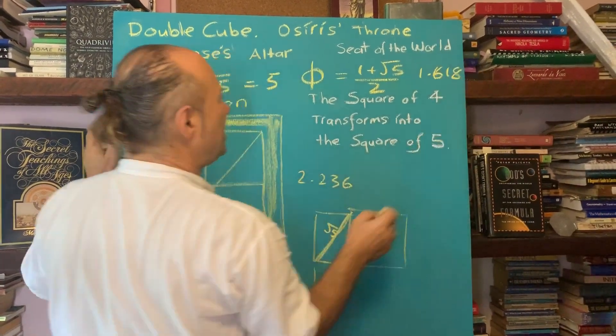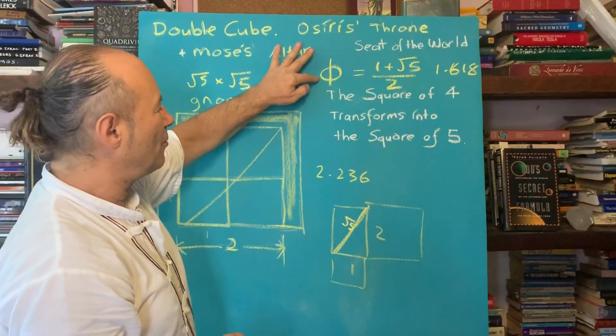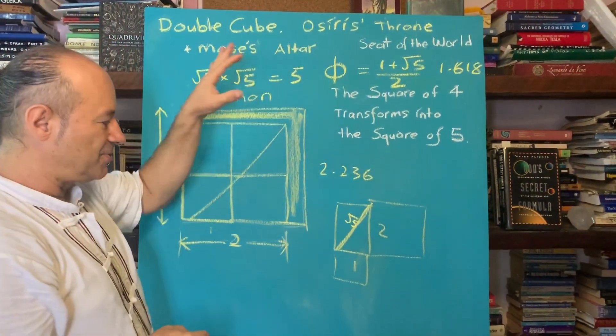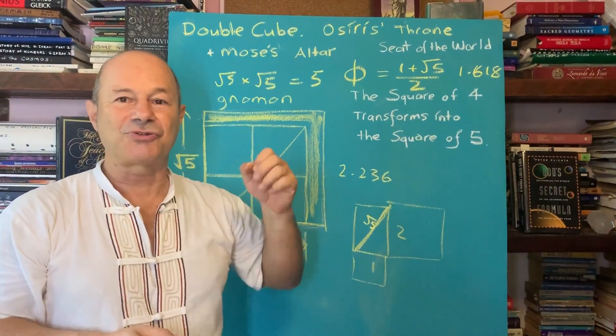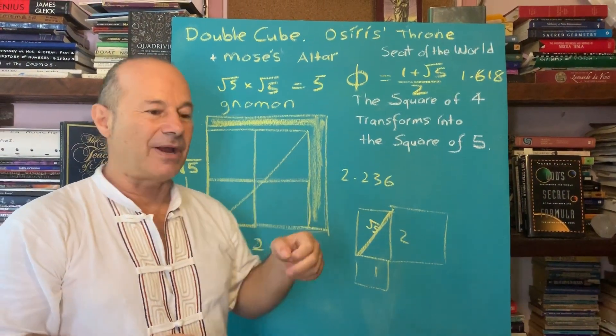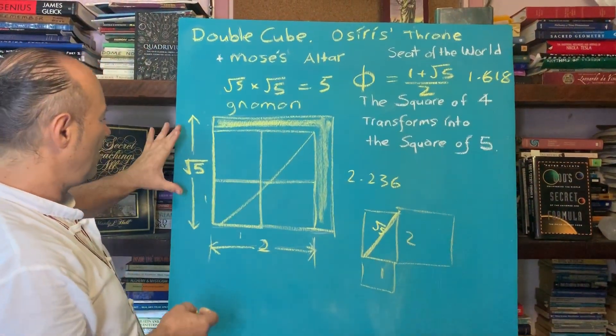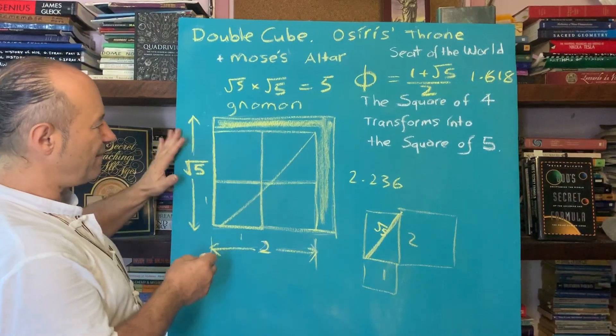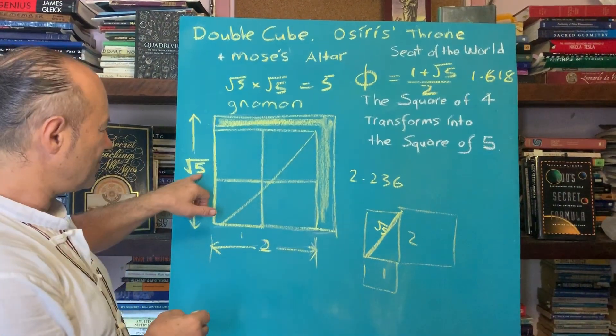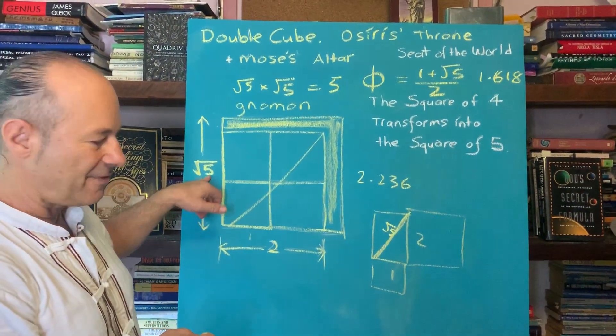That gives us 1.618. We need to understand the golden ratio to understand the true value of pi. As we've explained, the true value of pi has to do with five, which has to do with root five.